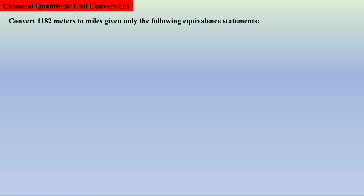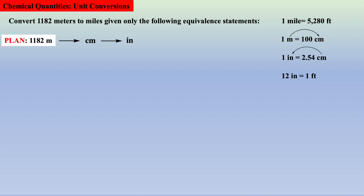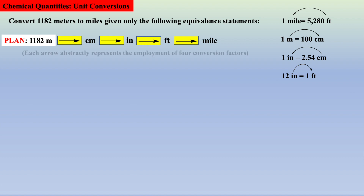To further review and reinforce unit conversions, let's convert 1,182 meters to miles using only the given definitions. From the given definitions, we see that we can convert meters to centimeters, centimeters to inches, inches to feet, and feet to miles. Our plan has a total of 4 arrows, which means the employment of 4 conversion factors. Let's use the units of our plan to guide the execution of this exercise.